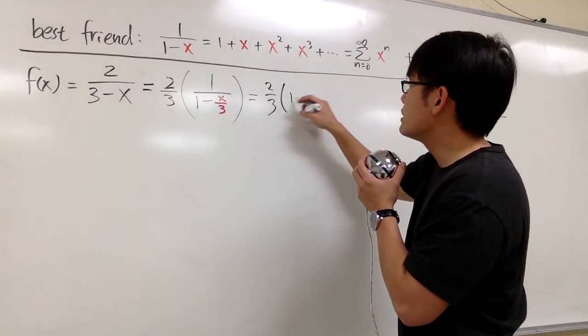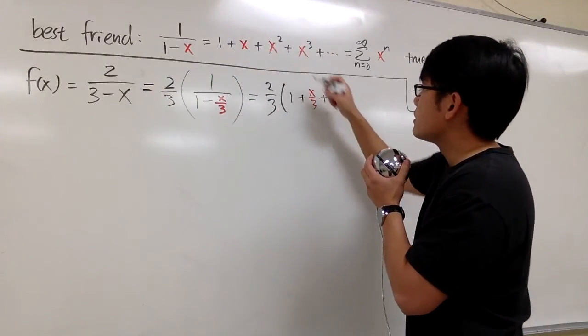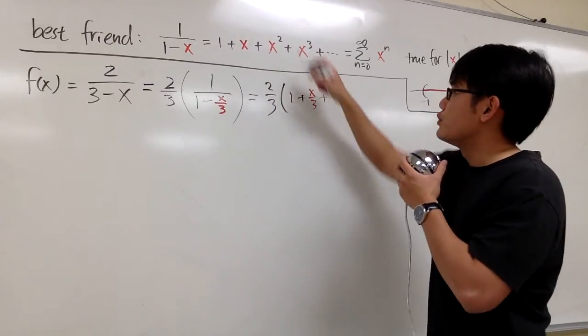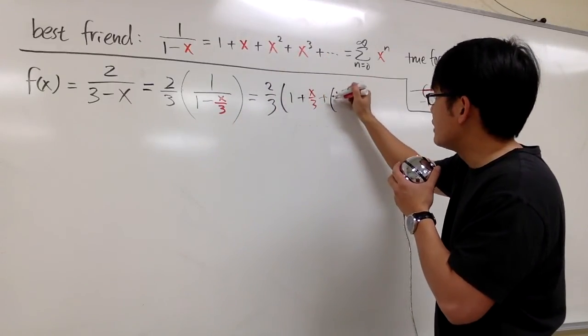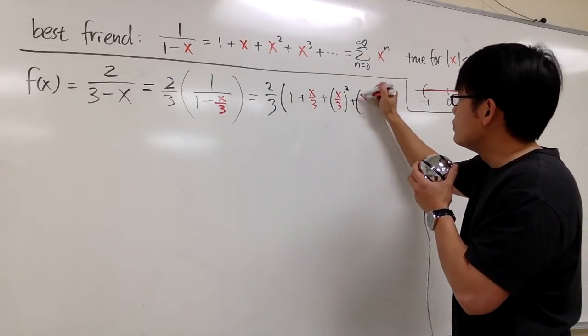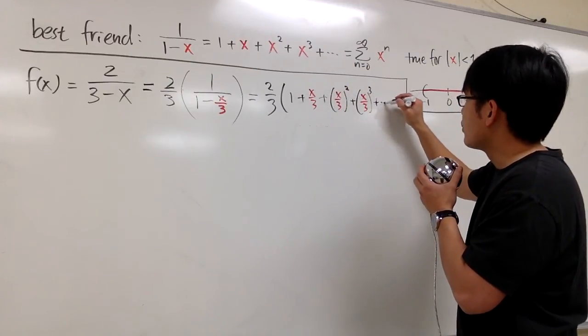We have 1 first, plus, instead of x, we have x/3. Plus, instead of x, we have (x/3) in the parenthesis, and then raised to the second power. And then plus (x/3) to the third power. And then it keeps on going forever.